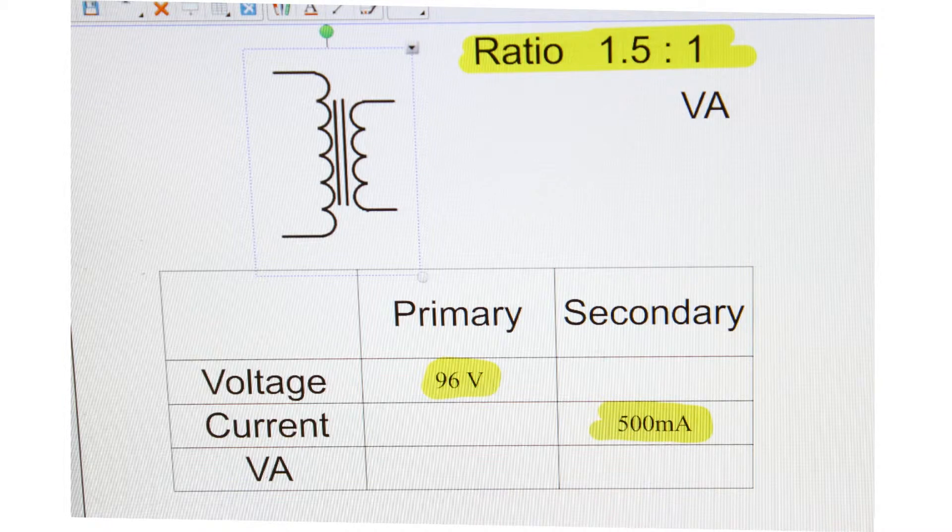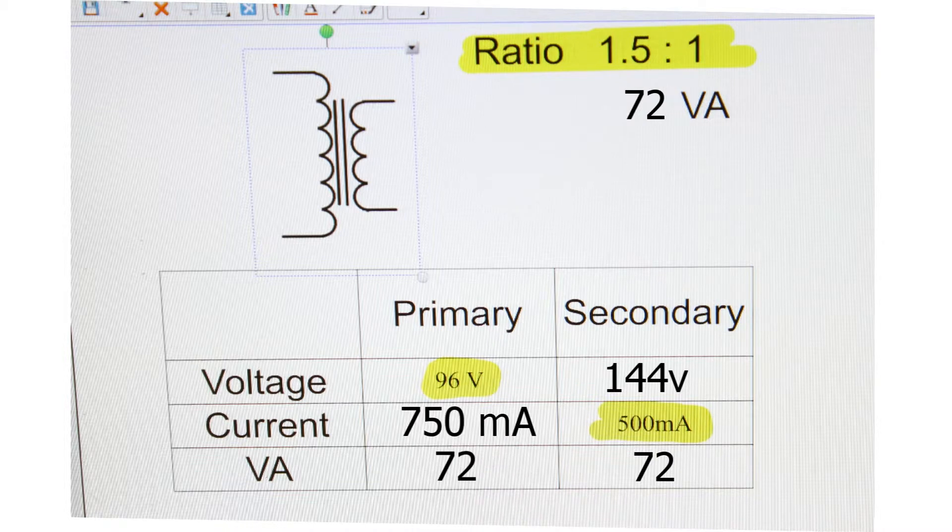Here we see a transformer circuit. It's a 1.5 to 1 ratio. We have 96 volts on the input and 500 milliamps secondary current. We can figure out the secondary voltage by taking 1.5 times 96. To figure out the volt amps, we multiply the volts times the amps and come up with 72 volt amps. It's going to be the same on the primary. If we take that and divide by 96, we come up with 750 milliamps.